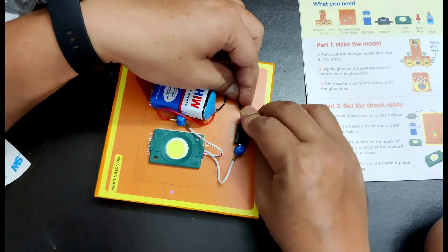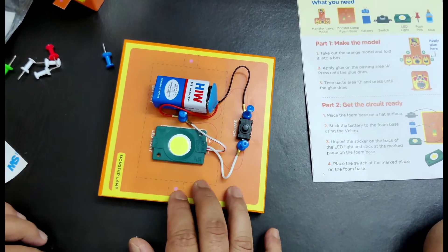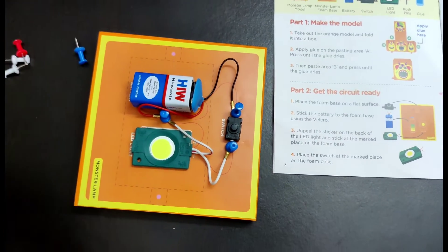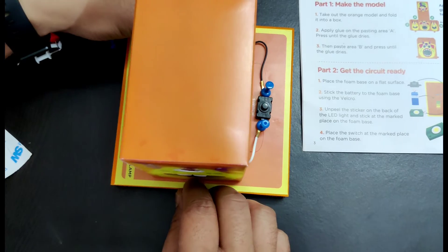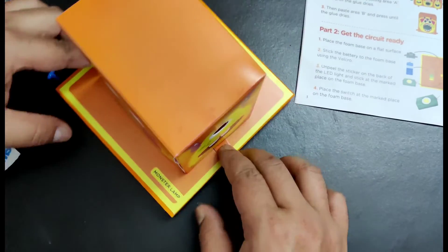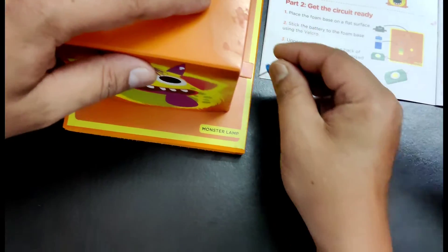Okay, and one more battery wire will be connected with the next switch. Here. All right, and then what we have to do, we have to fix the box, right Henry? Yeah, over here, just like this, and we need two more pins so that we can just fix this box to the base.